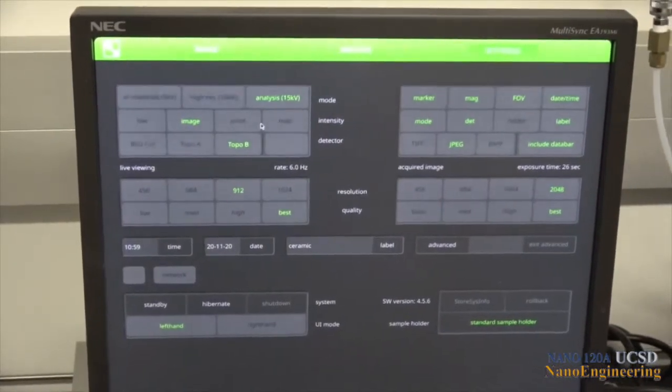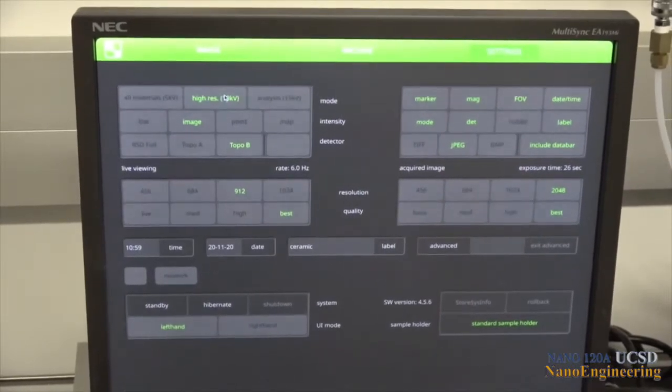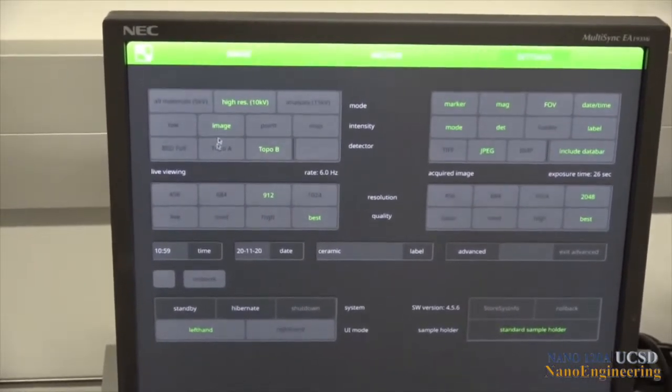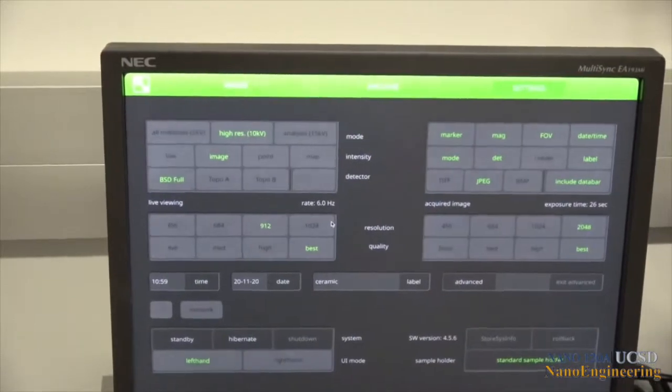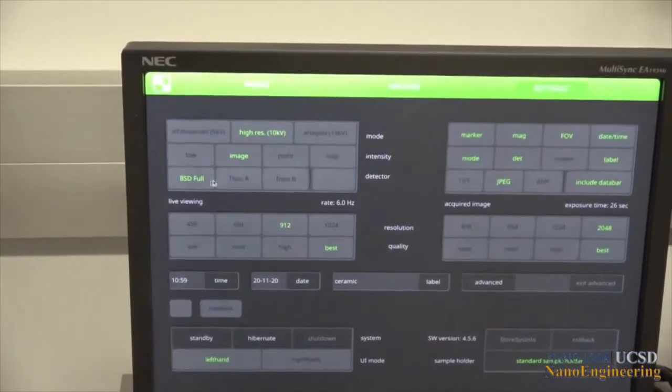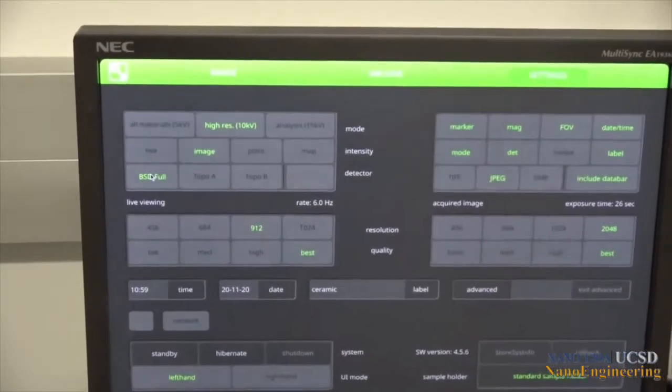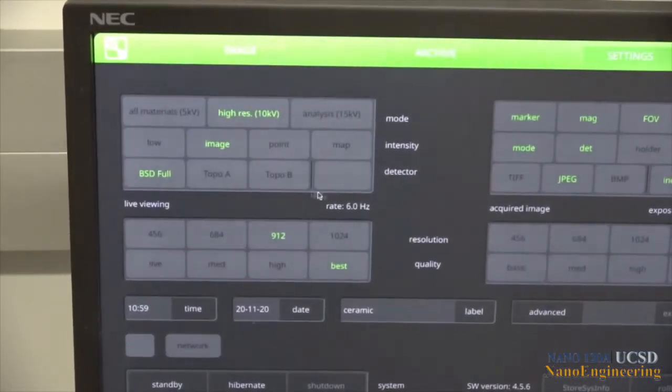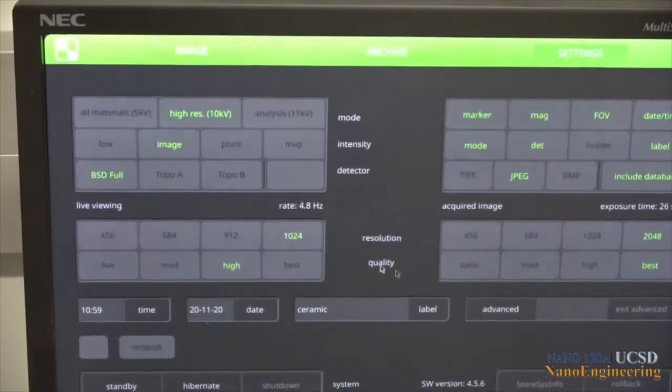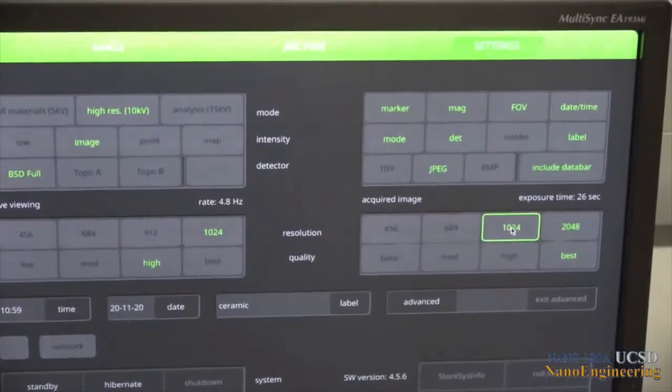To set up our microscope for imaging our sample, we choose the 10 kV accelerating voltage and an adequate spot size beam current provided by the image icon selection in the intensity menu. In this demonstration, we will show how the image can vary with our choice of detectors, starting with the backscatter full mode and then moving into the topo A and topo B modes. We'll start with the BSD full and set up the viewing screen image parameters prior to moving the sample into the SEM portion of the microscope.